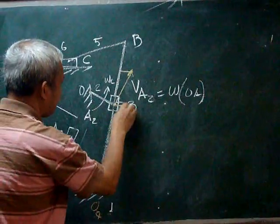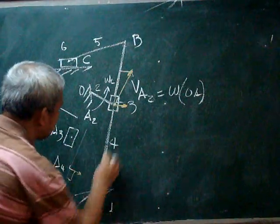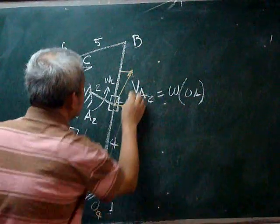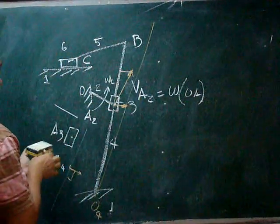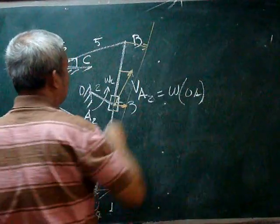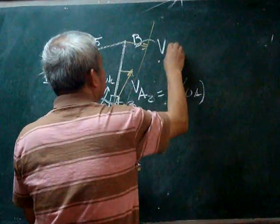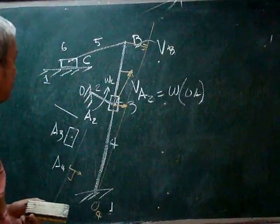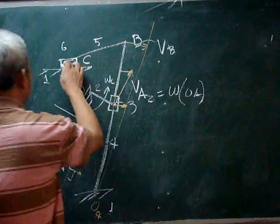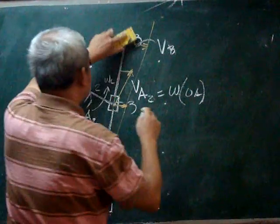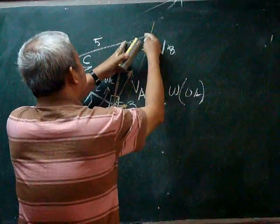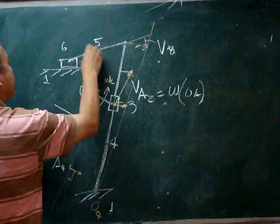With that velocity vector, we can make this proportionality line. We know the velocity of point B is given by this vector. To determine the velocity of C by resolution and composition method, we can transfer this vector here.